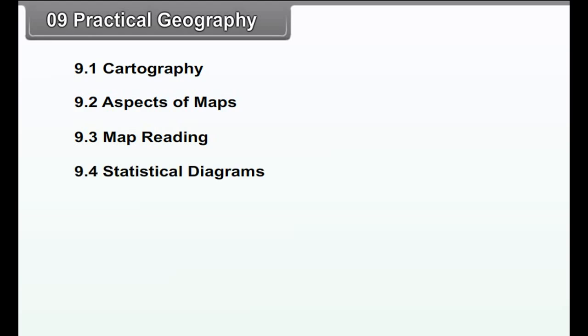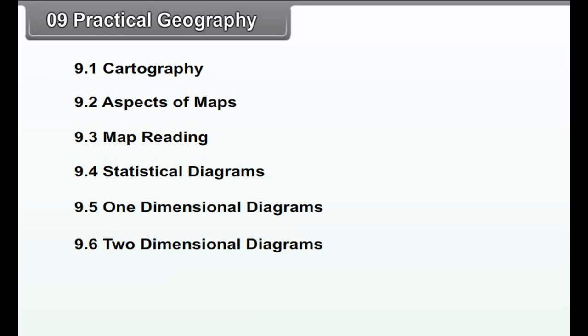Chapter 9 Practical Geography. We will study the following points in this chapter: 9.1 Cartography, 9.2 Aspects of Maps, 9.3 Map Reading, 9.4 Statistical Diagrams, 9.5 One-Dimensional Diagrams, 9.6 Two-Dimensional Diagrams.